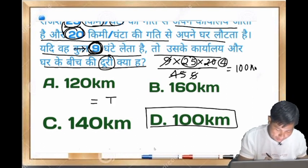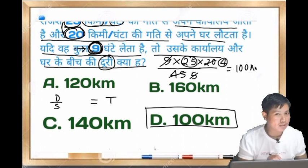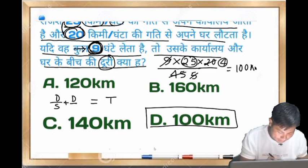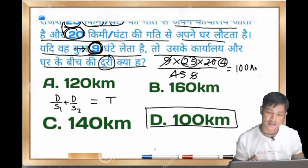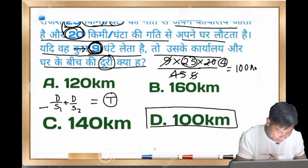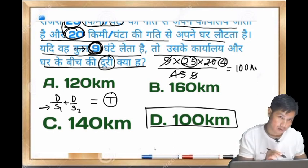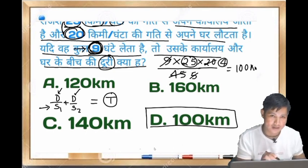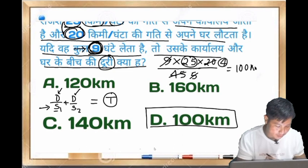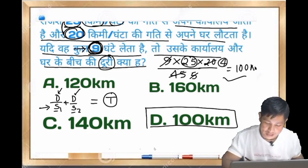Total time is equal to distance divided by speed, plus distance divided by speed. When we have the same distance, we use speed one and speed two. Same distance divided by each speed gives us the total time.